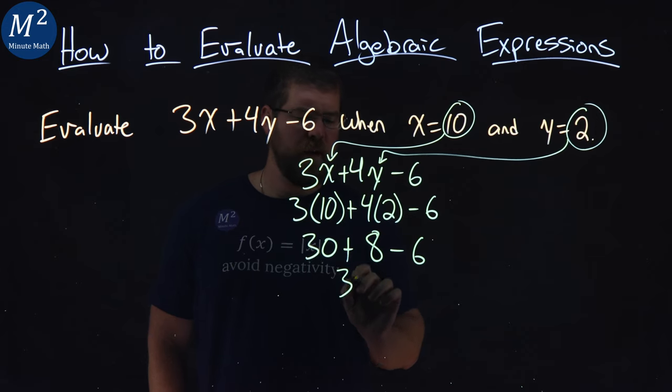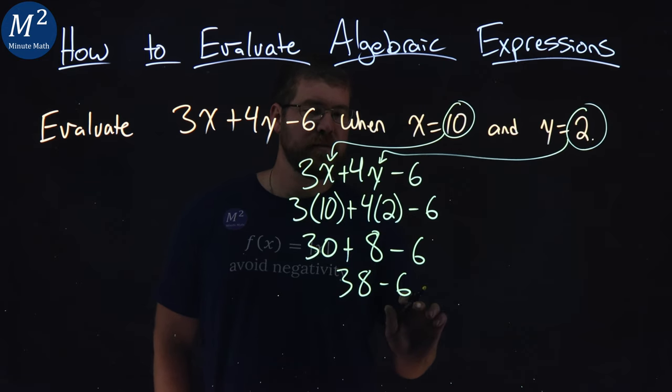30 plus 8, 38. Minus 6. Well, 38 minus 6 is a 32.